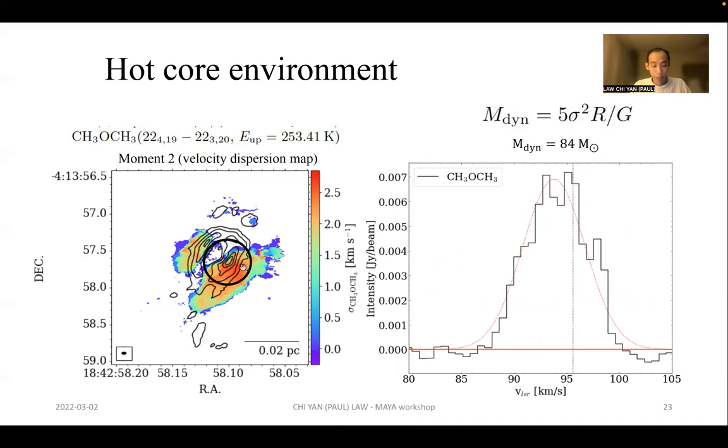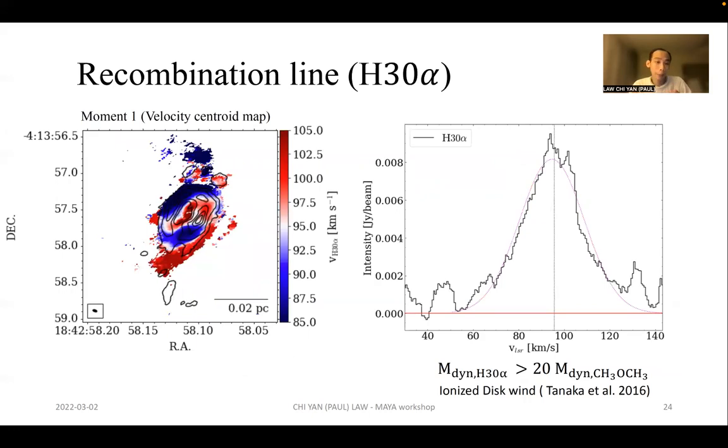We applied a dynamical mass estimation by taking the average spectrum from a 0.3 arcsecond radius from the main continuum peak, and we applied a virial analysis. We find a dynamical mass of 84 solar masses. We also applied the same analysis towards the recombination line H30α, but we find a significantly higher mass which is at least 20 times higher than the dynamical mass inferred by the high excitation lines. We also find this very interesting strong velocity gradient from the moment 1 map of the recombination line, and we interpret this result as a launching of ionized disk wind from the massive protostar embedded within, which is supported by some simulation studies such as Tanaka et al. 2016.